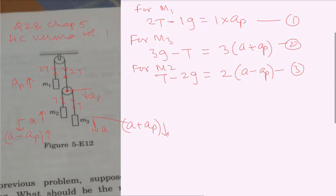So if I add 2 and 3, I get g is equal to 5a plus ap.